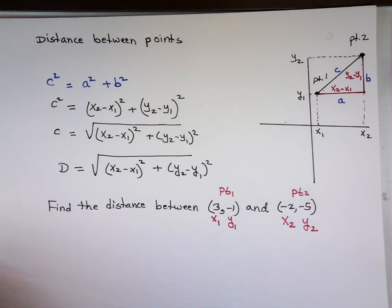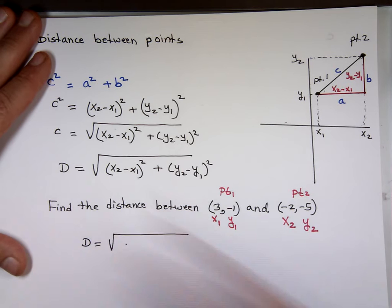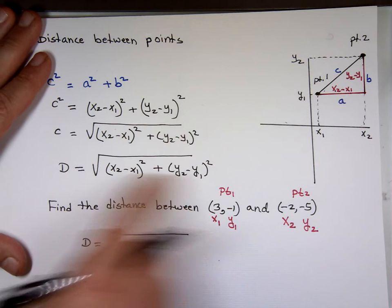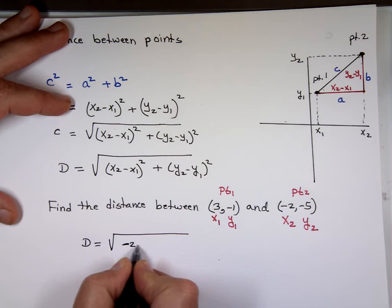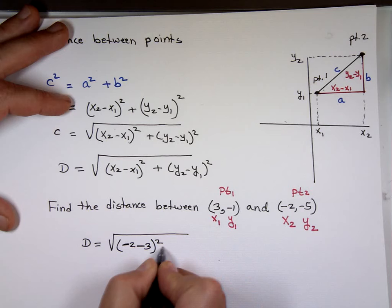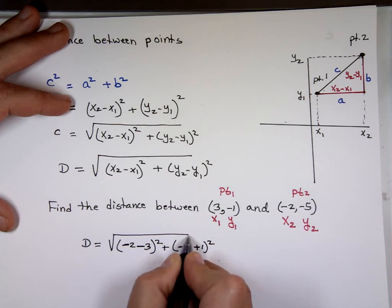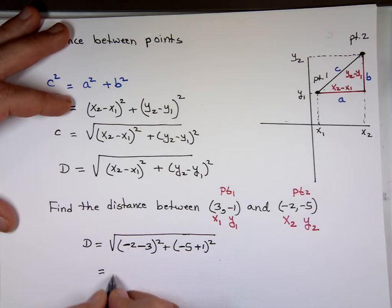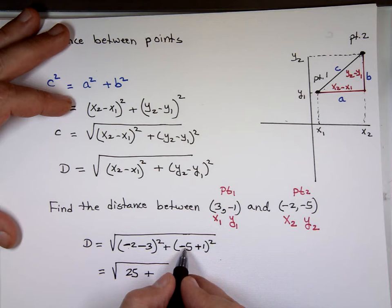So the distance between these two points is going to be the square root of (X sub 2 minus X sub 1) squared plus (Y sub 2 minus Y sub 1) squared. By the way, which one you write first doesn't matter because addition is commutative. So: X sub 2 is -2, minus X sub 1 which is 3 — that's -5, squared, equals 25. Y sub 2 is -5, minus Y sub 1 which is -1 — that becomes -5 plus 1, which is -4, squared, equals 16.